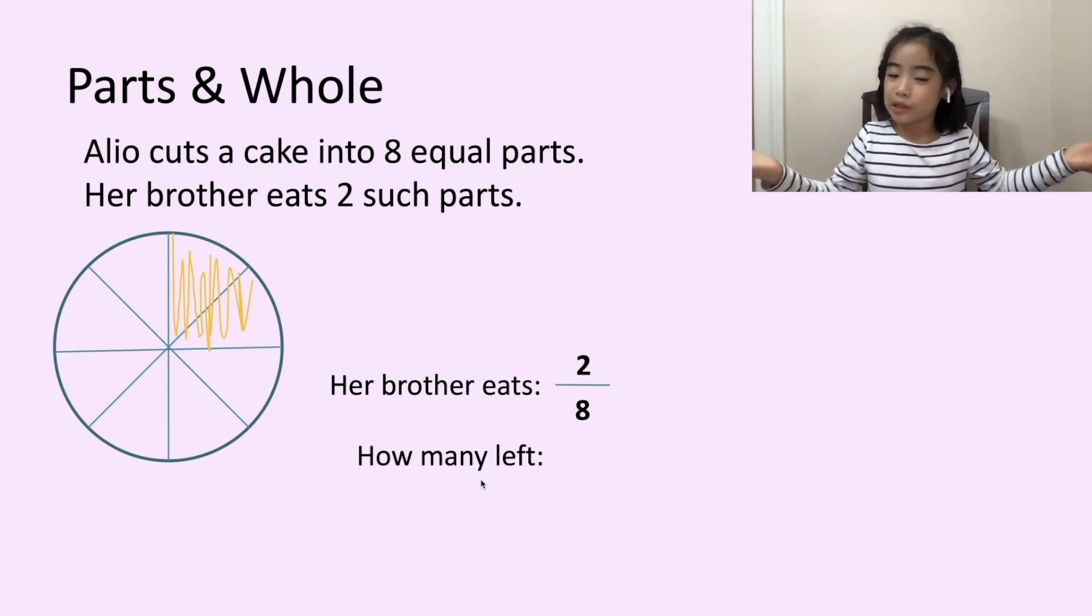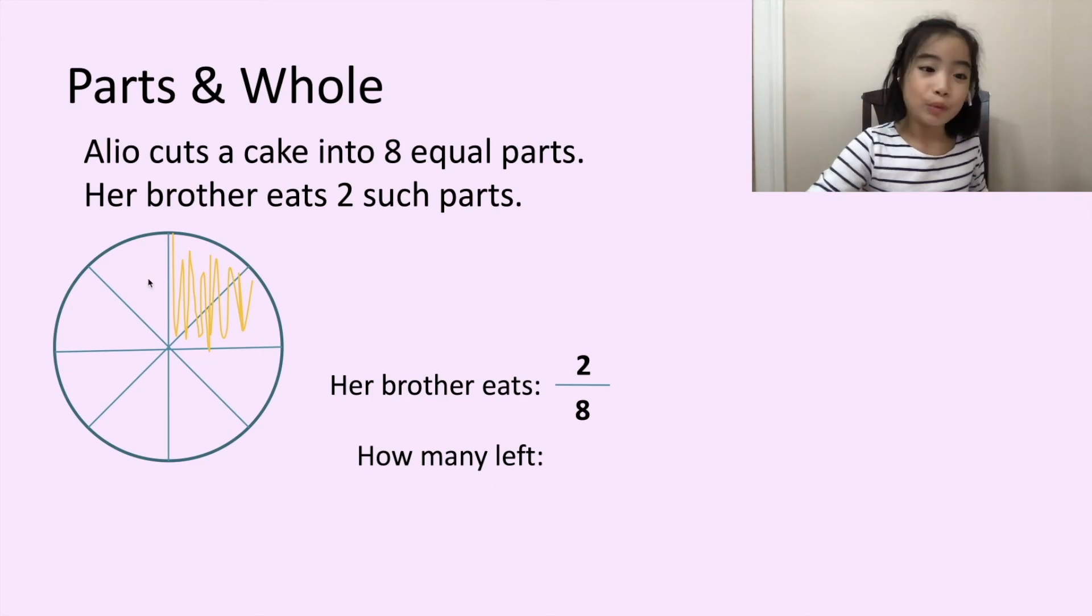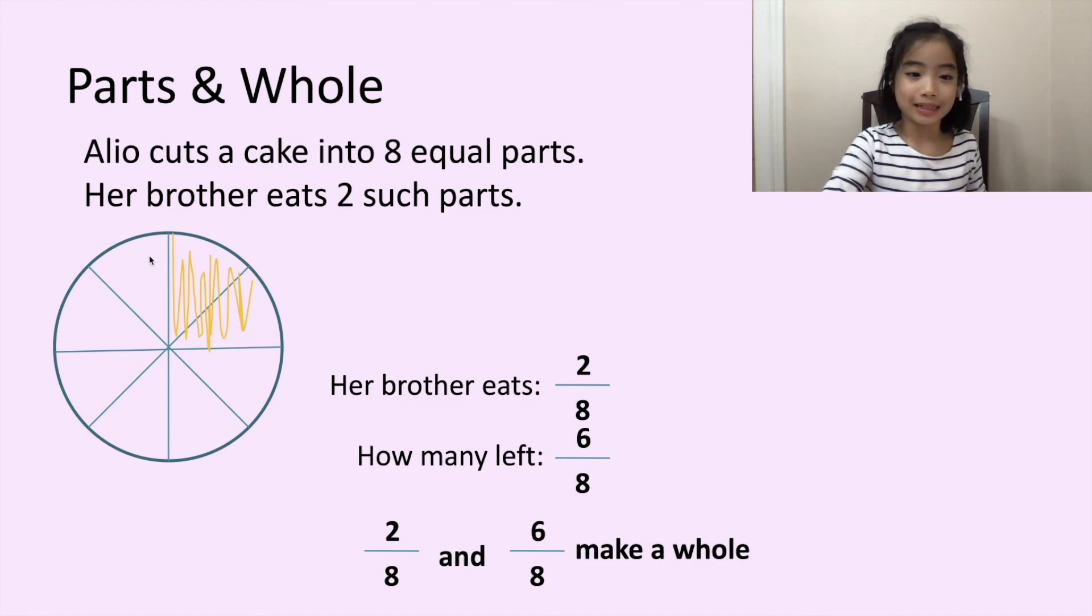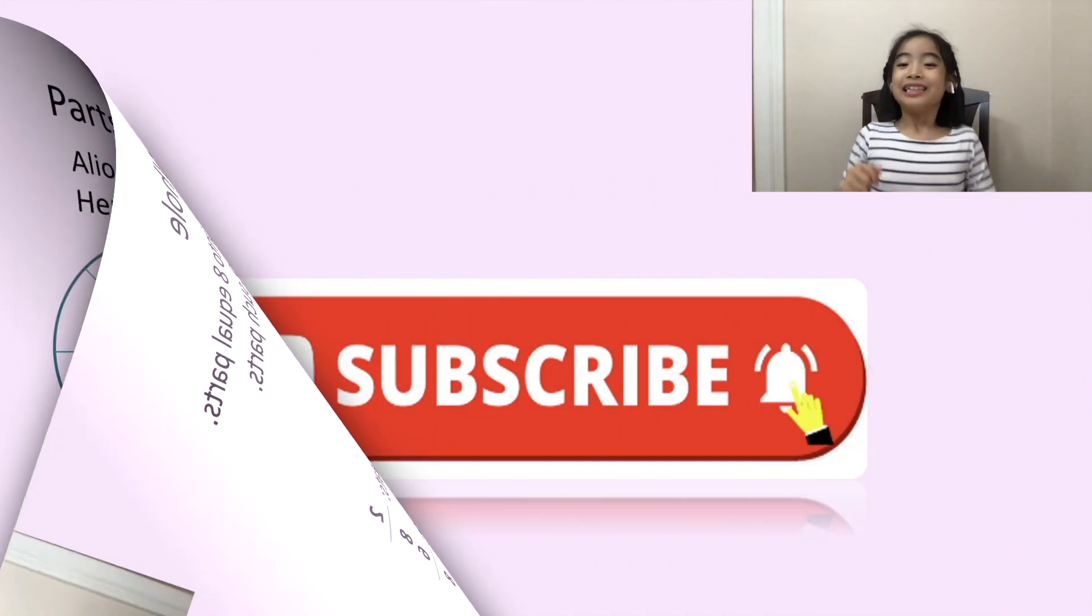So, how many pieces are left? We count. One, two, three, four, five, six. So, the fraction is six eighths. Or six eighths of a cake is left. So, we know that two eighths and six eighths make a whole.